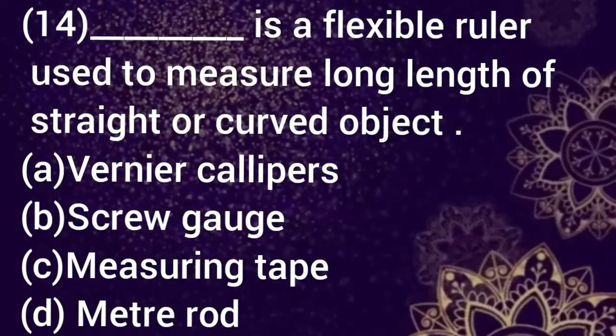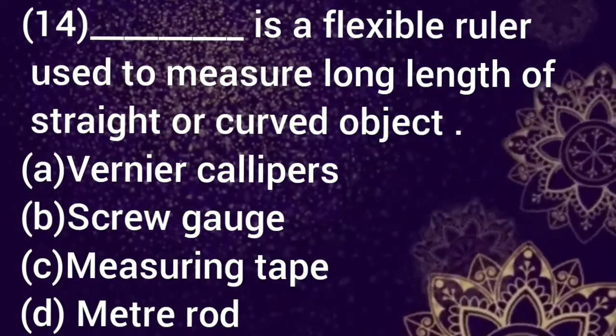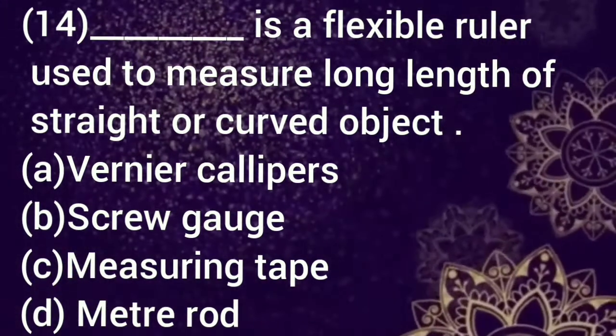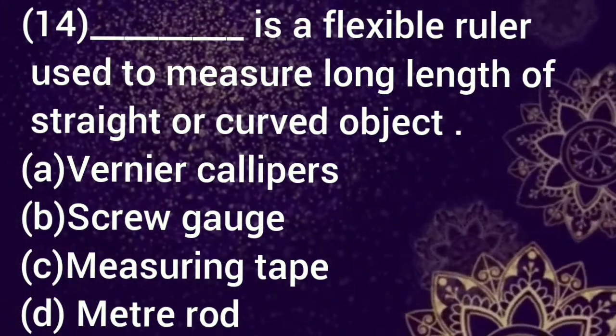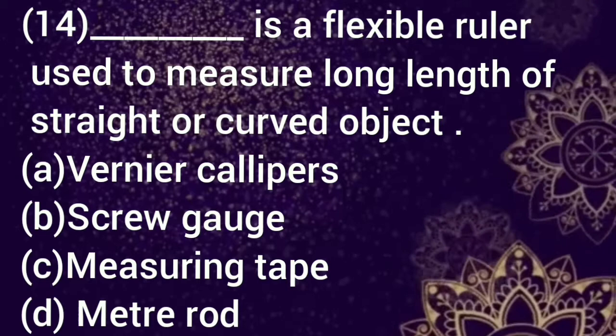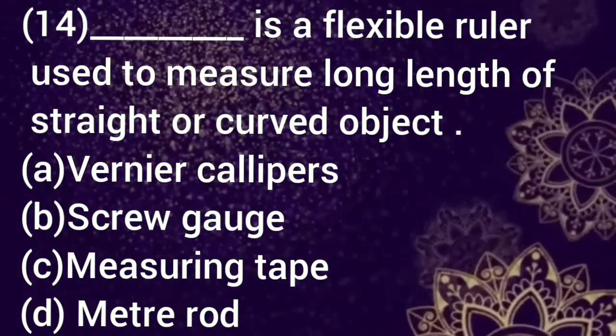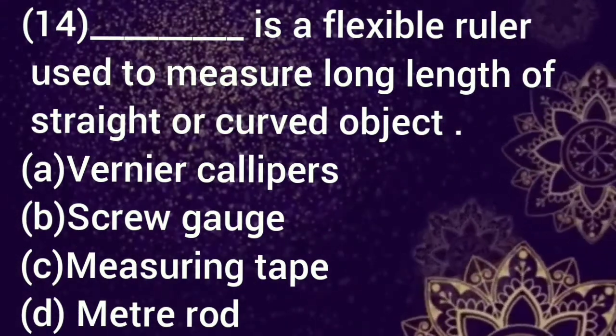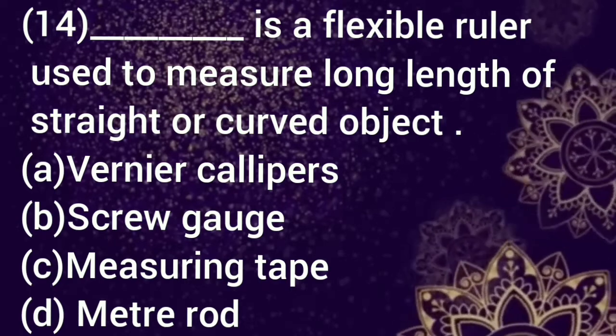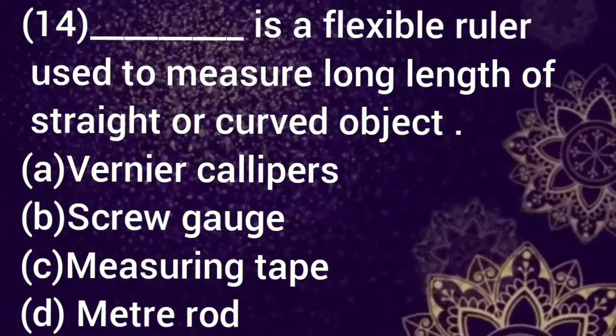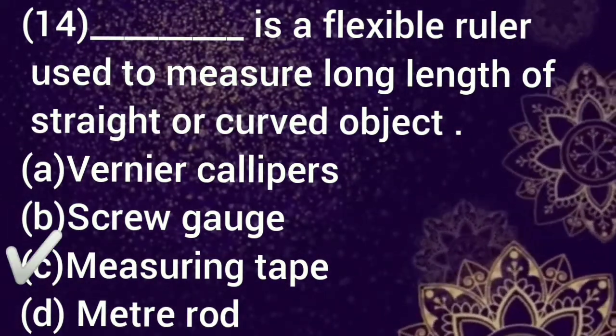Question number 14 says dash is a flexible ruler used to measure long length of straight or curved object. Option a: vernier caliper, b: screw gauge, c: measuring tape, d: meter rod. Select your answer. The correct option is option number c, measuring tape.